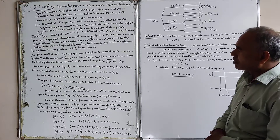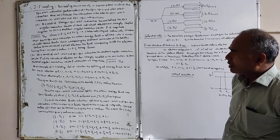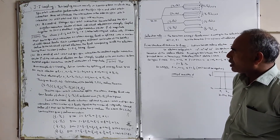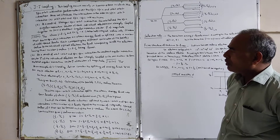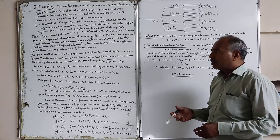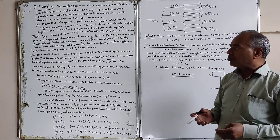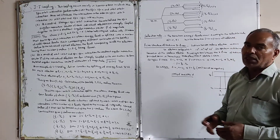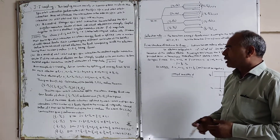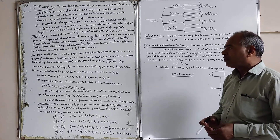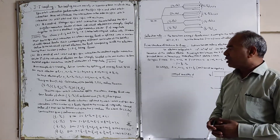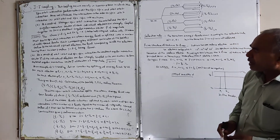The higher energy level corresponds to j equal to l plus 1/2. As a result of the orbit-orbit and spin-spin interaction, the resultant angular momentum vector j of the individual electrons are less strongly coupled with one another to form the total angular momentum vector of the atom of magnitude under root J(J+1) times h upon 2 pi.